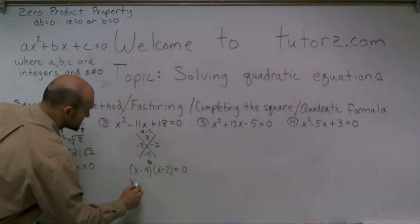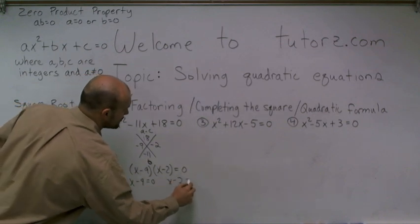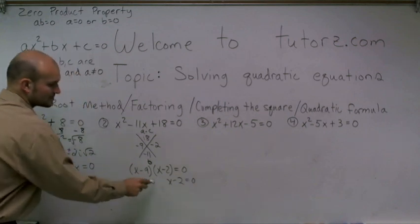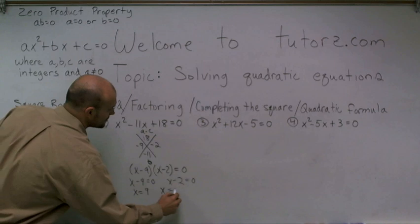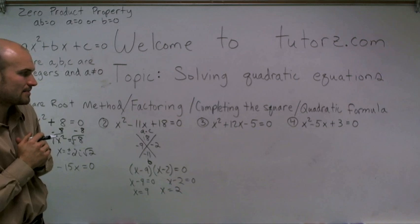So therefore, now I can write this as x minus 9 equals 0 or x minus 2 equals 0. Therefore, my two zeros, when I solve for x, I get x equals 9 and x equals 2. So those would be my two answers for this problem.